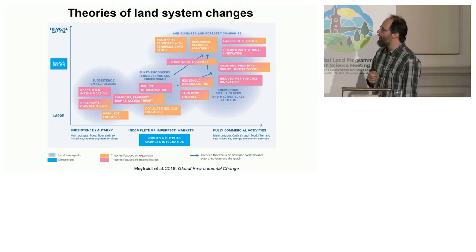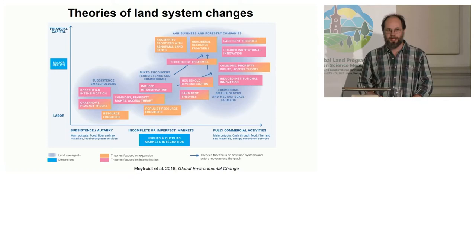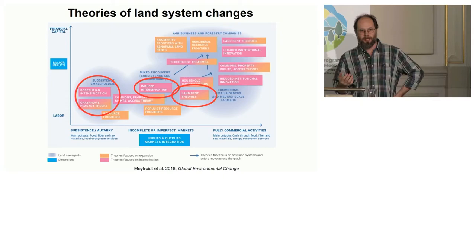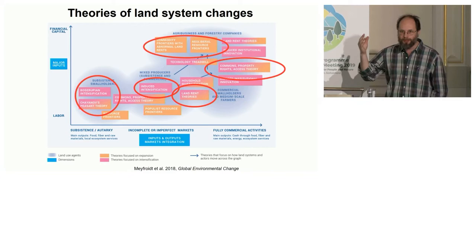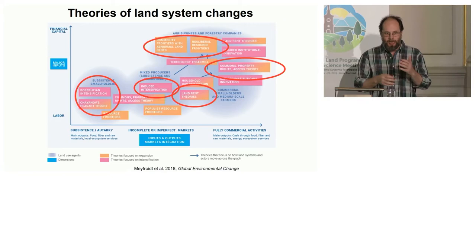This is a graph from recent efforts by many GLP members and beyond, who try to map the different kinds of theories that people use in land system science — from geographic and economic theories about subsistence, smallholders, and induced intensification, to land rent theories from Van Thunen or Ricardian economics, institutional theories from Ostrom and others, or higher-level theories about broader-scale processes like frontiers and development. So there is a rich set of theories, partly borrowed from other fields and partly developing within land system science, on which we can really build.